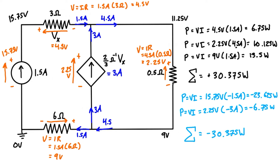We've found all of the currents flowing through each element, the voltage at each node, and the power dissipation and delivery by every element in the circuit.